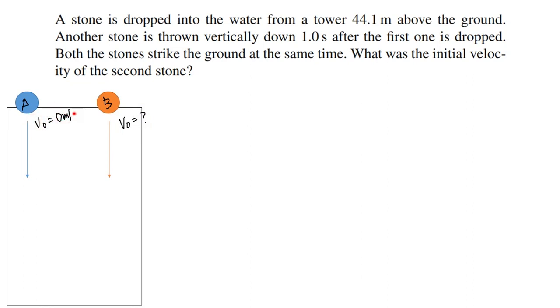Maglalagay tayo ng initial velocity pero hindi natin alam initial velocity nya. Tuloy-tuloy pa rin si stone A. The case is, sabi silang tumama sa ground. Yan, ito yung ground. Sabi silang tumama yan. Ang tanong, ano daw yung initial velocity ni B? Okay, before that, kung makikita natin may given tayo dito na 44.1 meters.